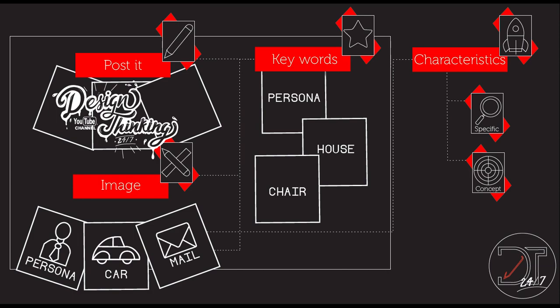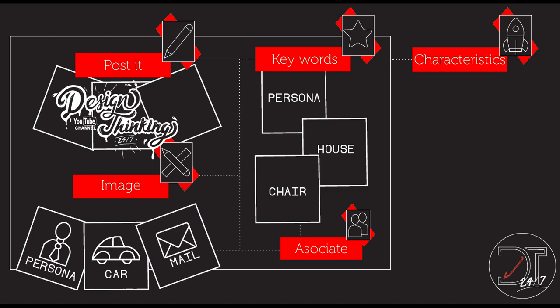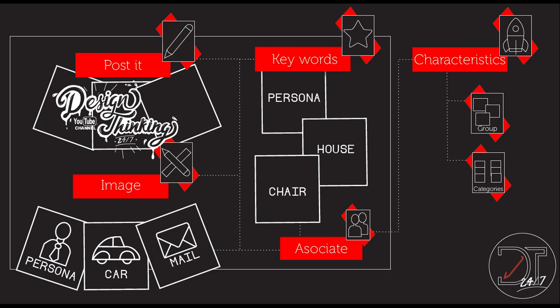When you have put all the categories with their specific colors and written all the keywords with their images, you start putting everything together — you start associating. When you associate, you group. You put everything into groups and you also assign categories. The categories are very important because they show the structure of a thought.